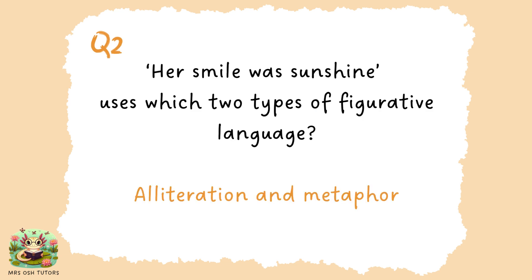'Her smile was sunshine.' So we have alliteration — 'smile' and 'sunshine', two words close to each other that begin with the same sound — and a metaphor. The metaphor is the word 'sunshine' being used to explain what her smile was like. Her smile isn't actually sunshine, so it's a metaphor to help us understand what it was like.